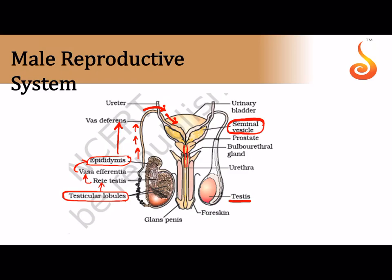The urethra runs down through the male external genitalia, the penis. The end of the penis has a bulb-like structure covered by a loose fold of skin called the foreskin; this bulb-like portion is referred to as the glans penis. Where the ejaculatory duct opens into the urethra, there is a single triangular gland called the prostate gland. Below that are paired glands called the bulbourethral glands.